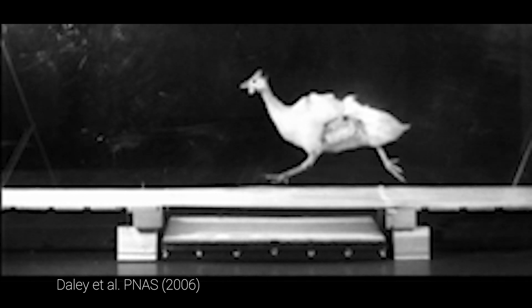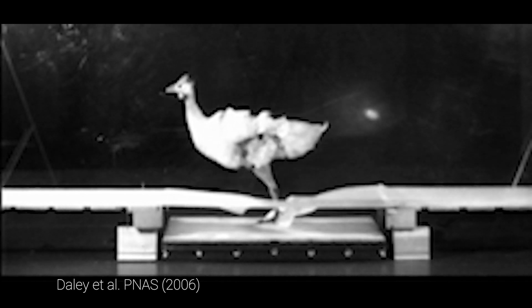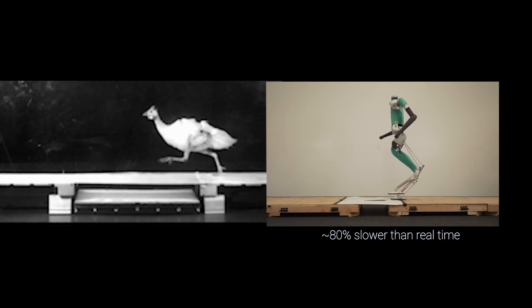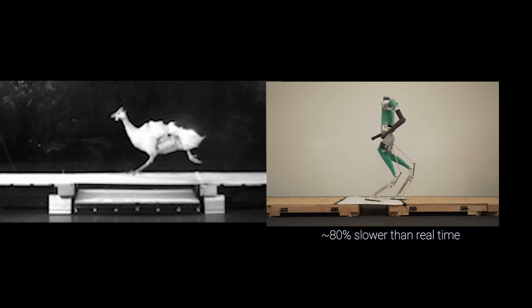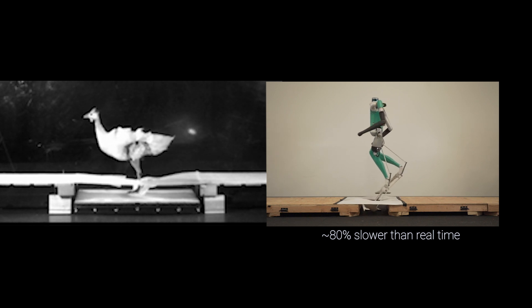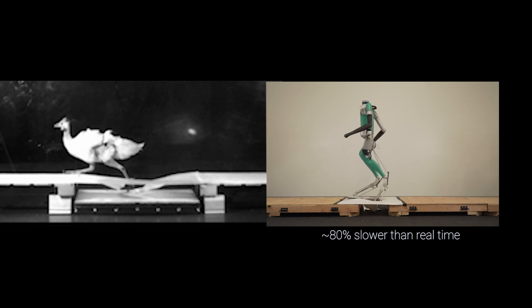In order to understand this phenomenon, we can go to a laboratory setting. Here we have a guinea fowl running down a corridor, and there's a hidden hole in the ground that the experimenters have hidden from the bird. Similarly, we set up the same situation for Digit, and here we can see side by side how they respond to that similar disturbance.